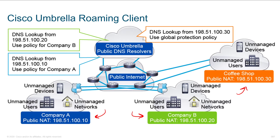Depending on the way that you connect to Umbrella, you're going to have different capabilities in terms of what Umbrella can do for you. If you were to install an agent on the endpoint, that agent is going to have a unique identifier for your company, and that unique identifier is embedded in the download when you download the agent. That agent, which is customized for you, is going to include a unique identifier in all the DNS lookups.